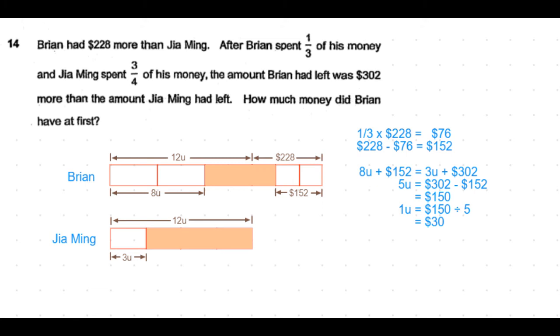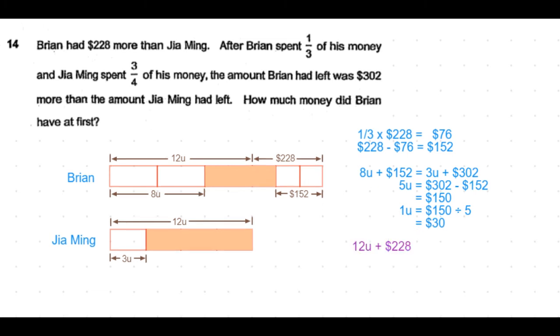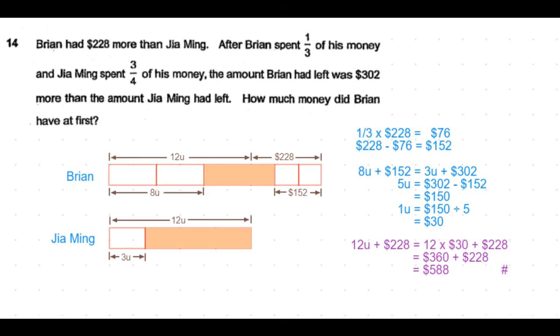The question is how much money did Brian have at first? At first he had 12 units plus $228. So 12 units is 12 × 30 which is $360, plus $228 is $588. So that's the answer to this question.